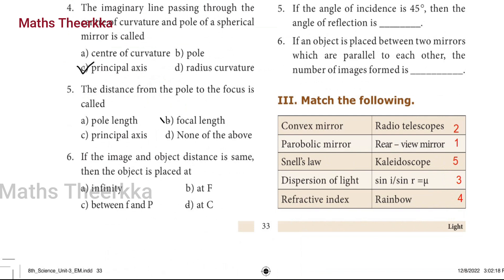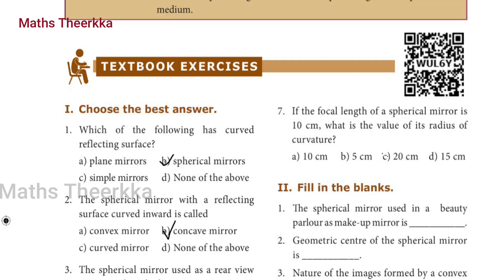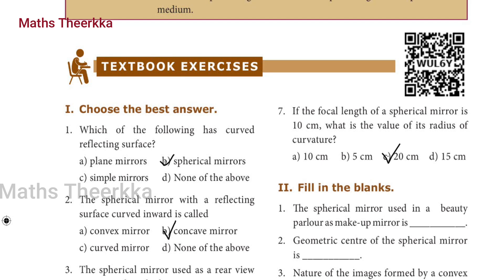B, focal length. Sixth question: if the image and object distance is same, then the object is placed at? Answer: D, at C. Seventh question: if the focal length of a spherical mirror is 10 cm, what is the value of its radius of curvature? Answer: Option C, 20 cm.